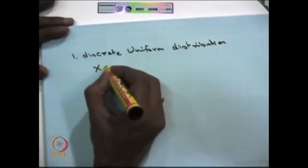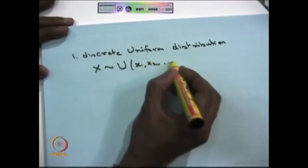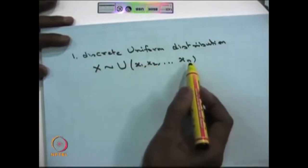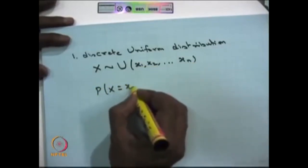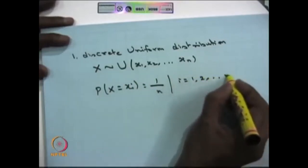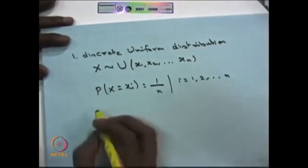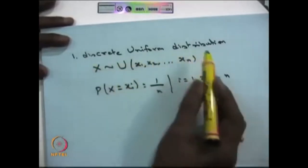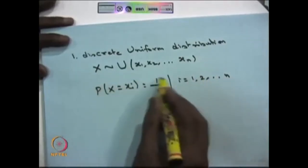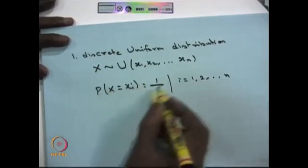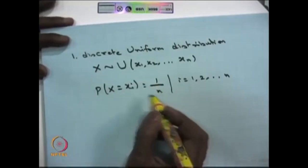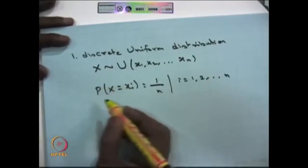Suppose the random variable X is discretely uniformly distributed with discrete points X1 to Xn. That means the random variable takes the possible values X1 to Xn and it has equal masses at each Xi for i varying from 1 to n, and 0 otherwise. Then we say the random variable follows a discrete uniform distribution, satisfying the property that the summation of all probabilities equals 1 and each P(X = Xi) is greater than or equal to 0, and greater than 0 at those Xi's. Therefore it satisfies the probability mass function of a discrete random variable.